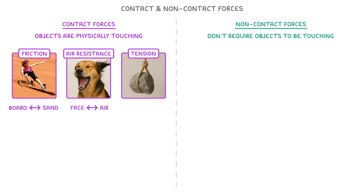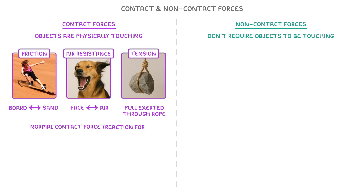Tension is a bit more difficult to explain, but is basically the pulling force that's being exerted through the rope. The last contact force to know is the normal contact force, which is also sometimes known as the reaction force.